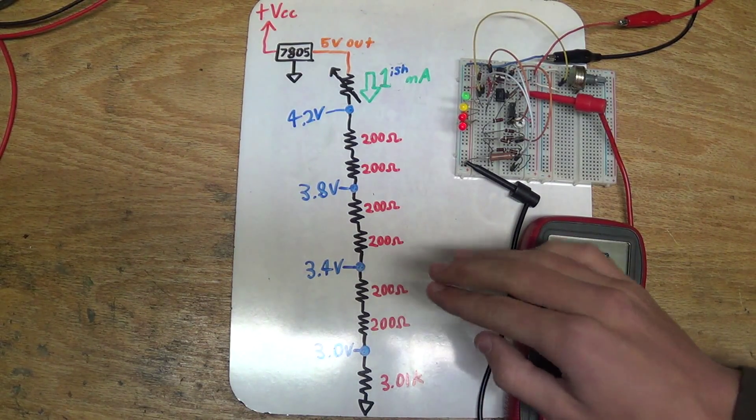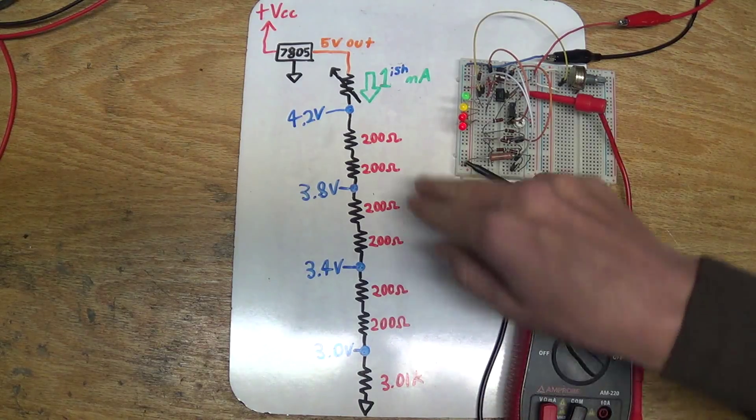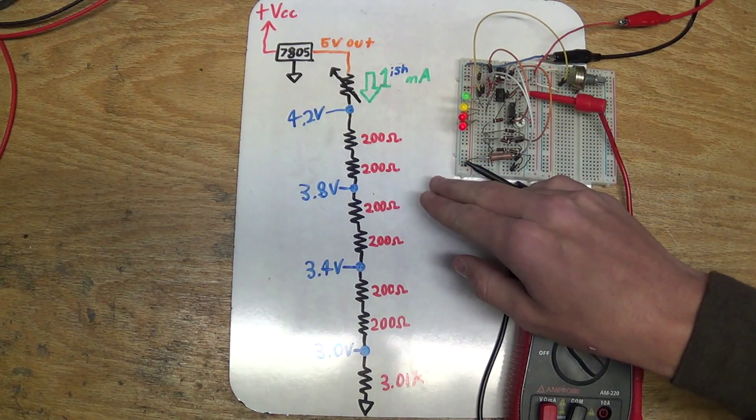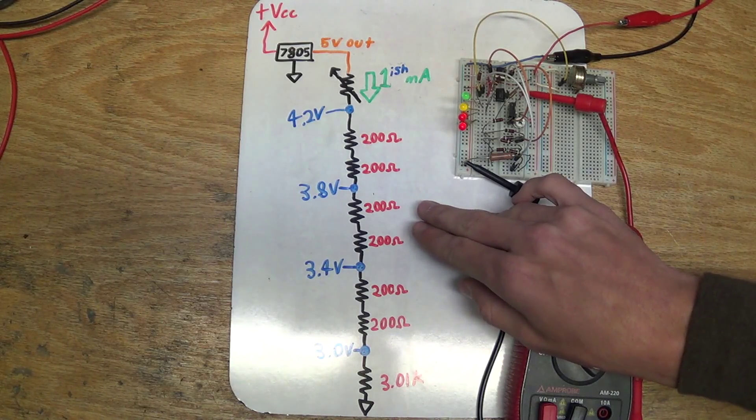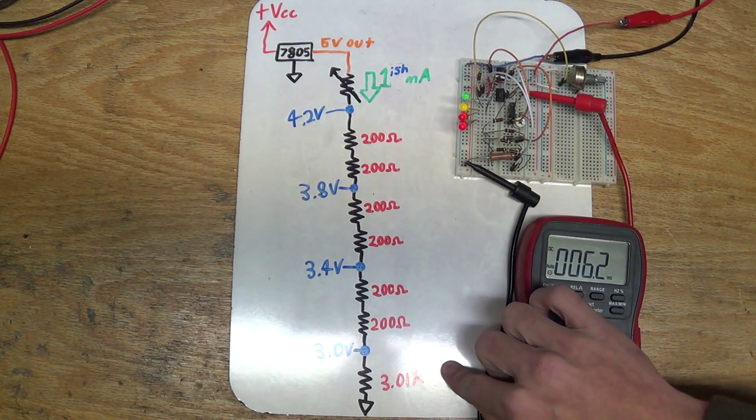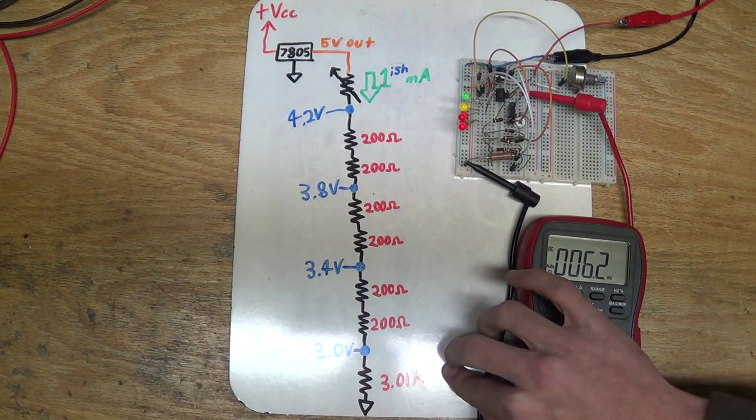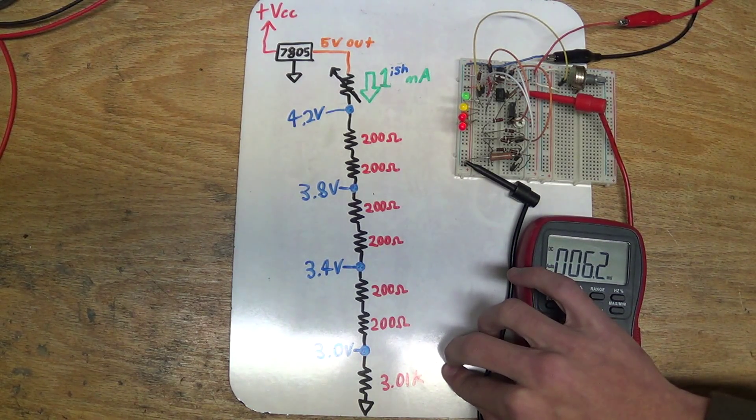The only problem is that they're 5% resistors, and every single one of them is a little bit higher than their rated value. In fact, they read out on my multimeter to be about 201 ohms. And also, I couldn't find a 3K resistor, I had to use a 3.01K resistor. Luckily, it's a high precision resistor, so it's very accurate.